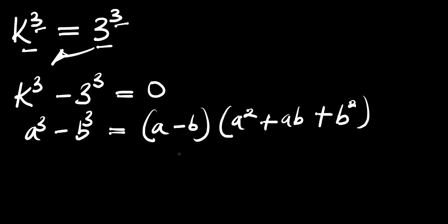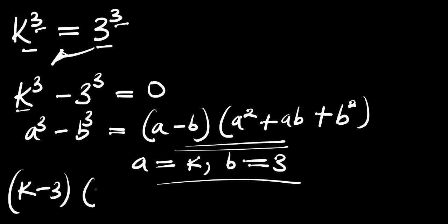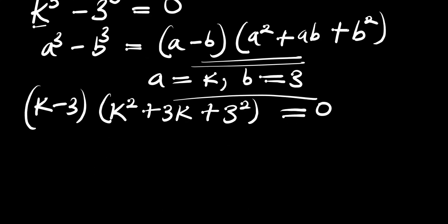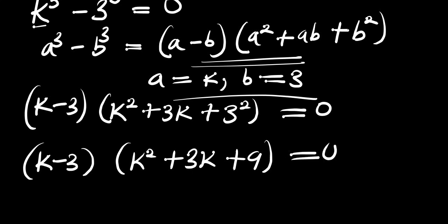To apply this identity, our a equals k and b equals 3. So we are going to insert this right here. That means we are going to have k minus 3 times k squared plus 3k plus 9, and this equals 0.